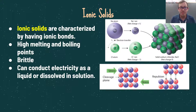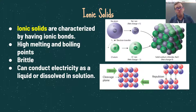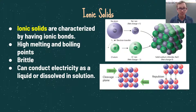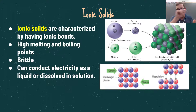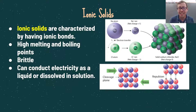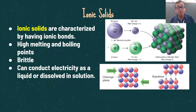Ionic solids are characterized by having ionic bonds — large electronegativity differences, typically one being a metal and the other a non-metal. They form lattice structures by alternating ions, which maximizes attractions and minimizes repulsions. Ionic solids have very high melting and boiling points due to the strong intermolecular attractions between the ions, and they're very brittle. If stress is applied, it forces the ions out of alternation, placing similarly charged particles next to each other, causing repulsion and breakage. Ionic solids cannot conduct electricity as a solid because ions are not free-moving within the lattice. However, dissolved in solution or melted into a liquid, the ions become free-flowing and can conduct electricity.